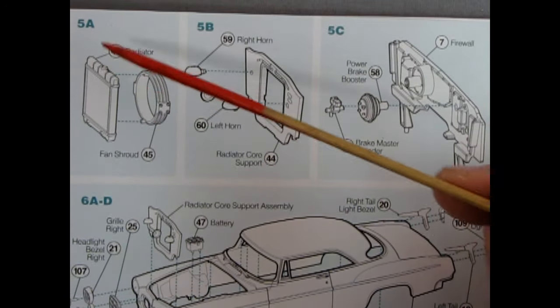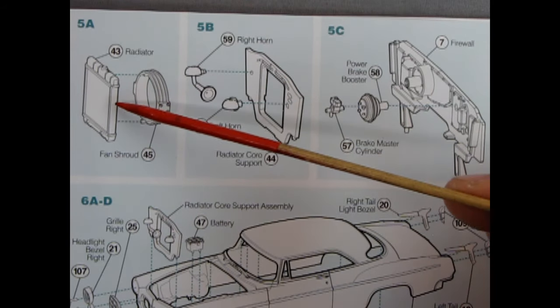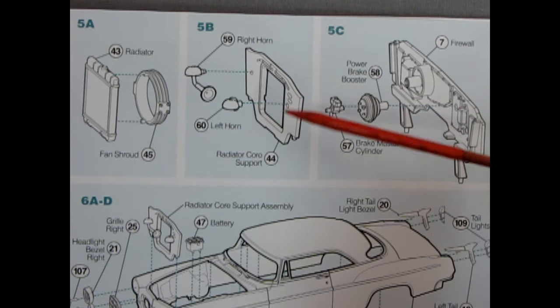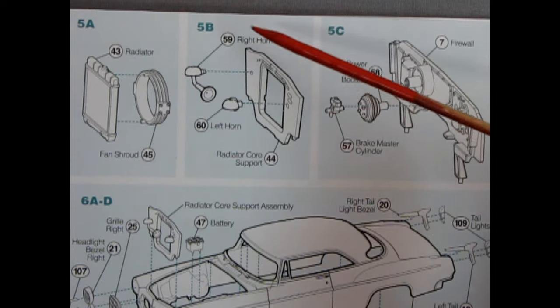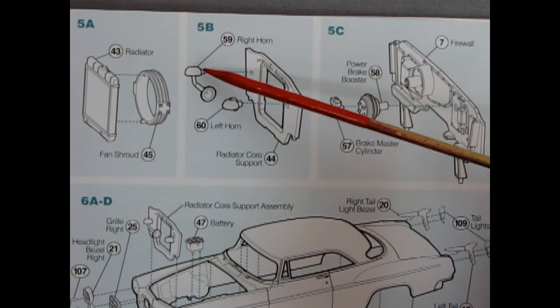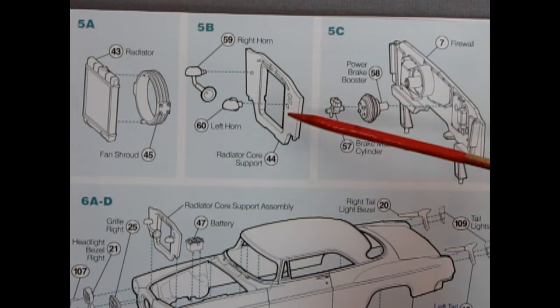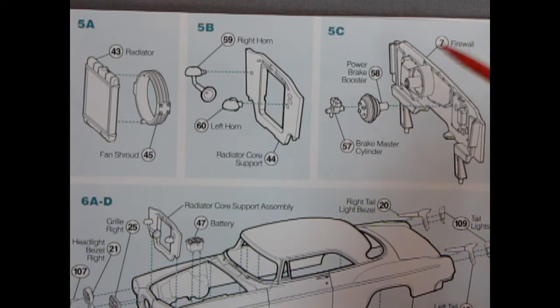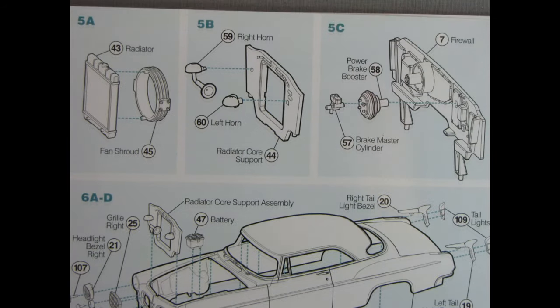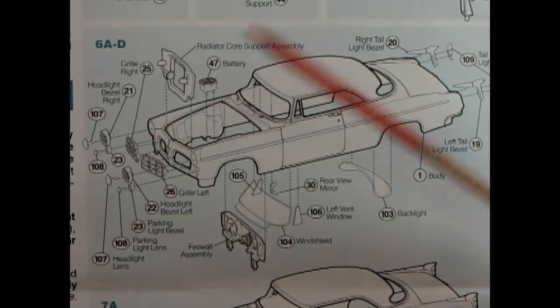Next up we have the radiator and firewall. So here we see the radiator in 5A with the fan shroud being glued on. Then we have the radiator core support in 5B with the right and left hand side horns being glued in. Followed by 5C which shows the firewall, the power brake booster, and the brake master cylinder all being assembled together.